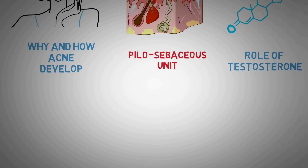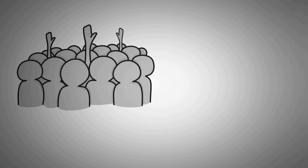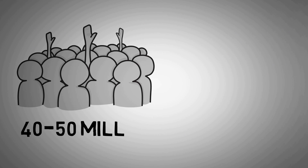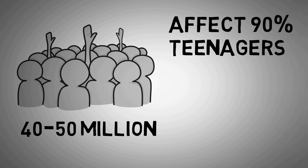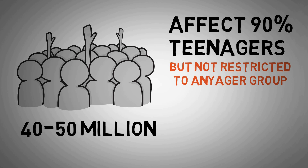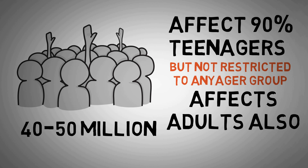Acne is the most common skin condition in the United States. According to the Academy of Dermatology, mild to moderate acne affects 40-50 million Americans per year. While acne usually begins in puberty and affects almost 90% of teenagers, acne is not restricted to any age group. In fact, acne affects 20% of adults between the ages of 25 and 44.